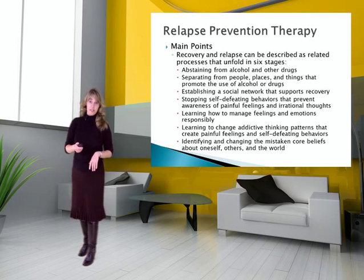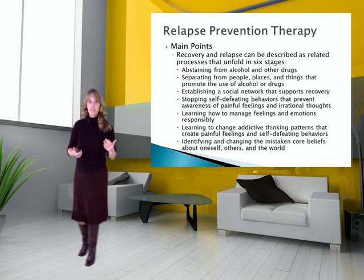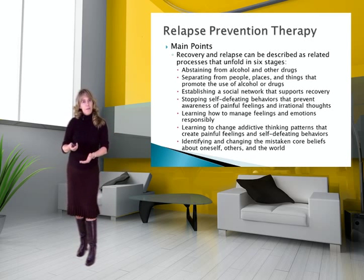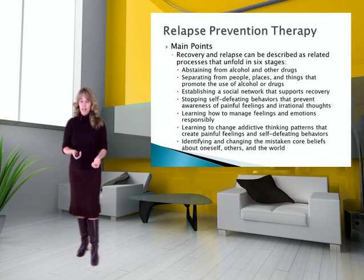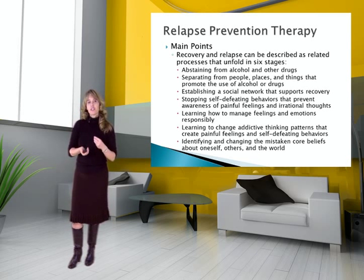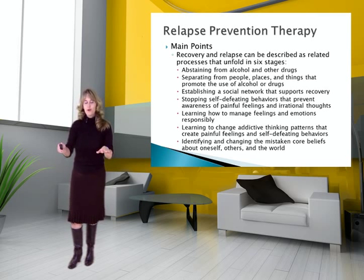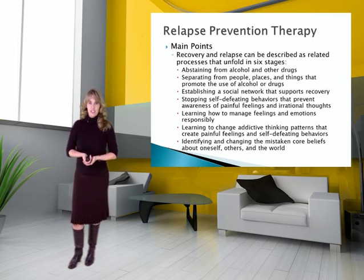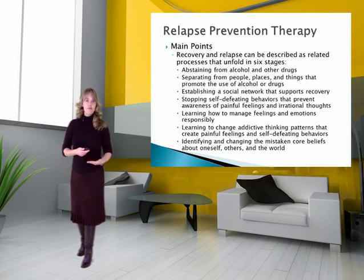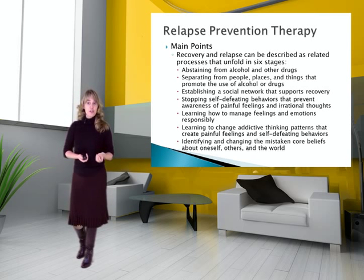Relapse prevention therapy has a lot of main points. Recovery and relapse can be described as related to processes that unfold in six stages. First, the person decides it's time to abstain, so they start detoxing — that takes a couple of days. During that period, they're separating from people, places, and things that promote the use of alcohol or drugs. Once the using supports are gone, they have to replace that with sober social supports. It's important early in recovery for people to establish a social network that supports recovery.